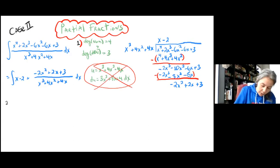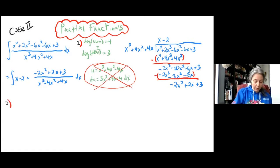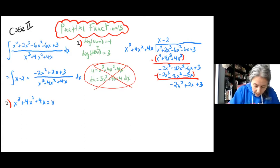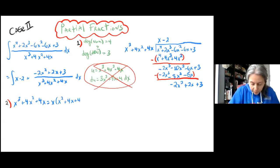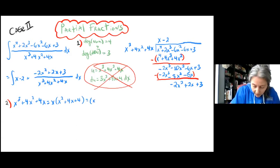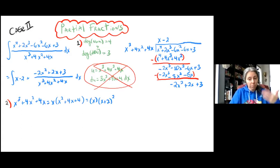Our next step of partial fractions is to factor the denominator. We have x cubed plus 4x squared plus 4x. The greatest common factor is x, so we factor that out to end up with x times (x squared plus 4x plus 4). We're looking for two numbers that multiply to 4 and add to 4 — those are 2 and 2 — which means we have x times (x plus 2) squared.